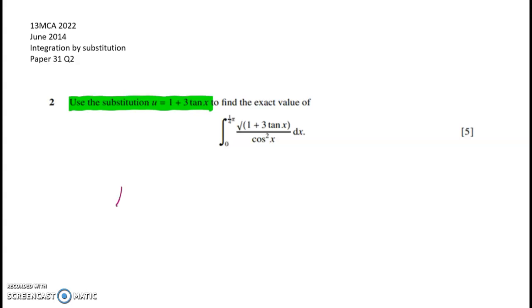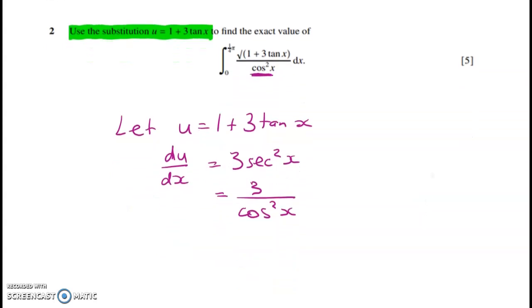So let's start off by saying let u equal 1 plus 3 tan x. Differentiating that gives me du by dx is equal to 3 sec squared of x, and that's equal to 3 over cos squared of x. And you can see that that cos squared of x in the denominator is sitting here. So it's starting to look quite good.